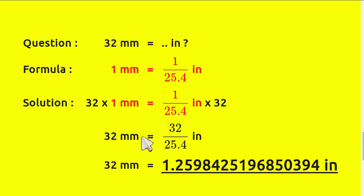32 millimeters equals 32 times 1, which is 32 divided by 25.4. Just move 32 from here to here because 32 times 1 equals its own number.